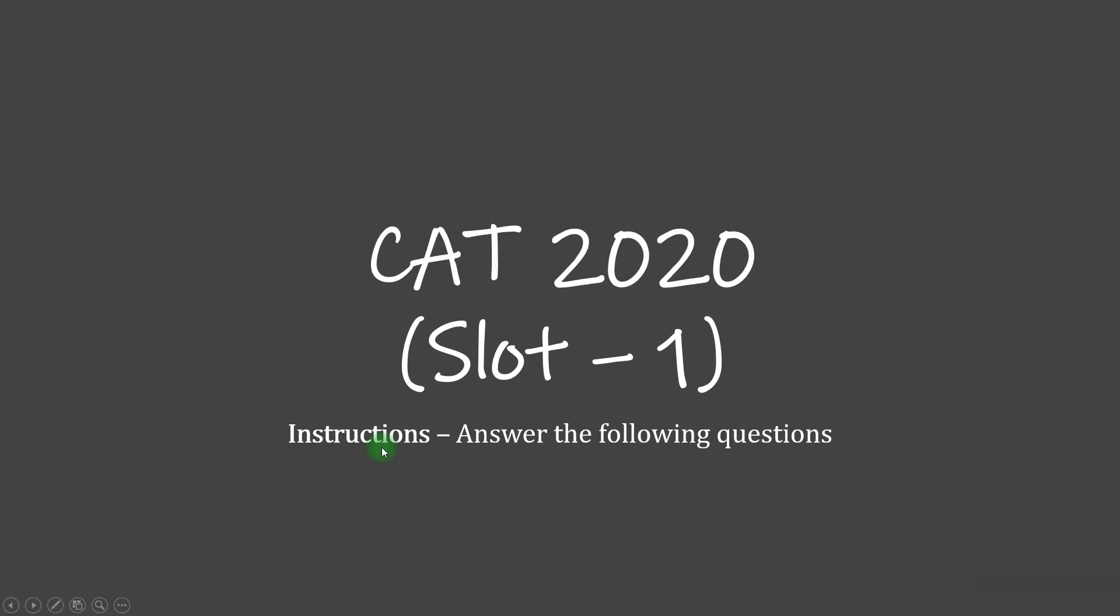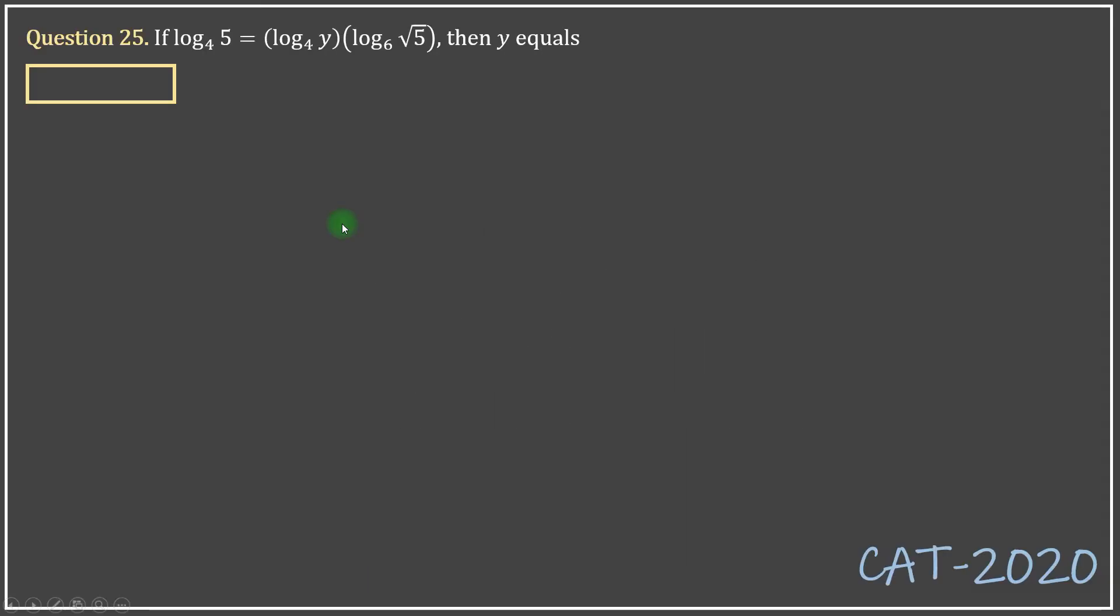So let's get on with the question from CAT 2020 Slot 1 that you have come for. If log 5 to the base 4 equals log y to the base 4 times log root 5 to the base 6, then y equals how much?